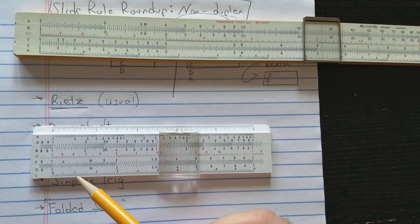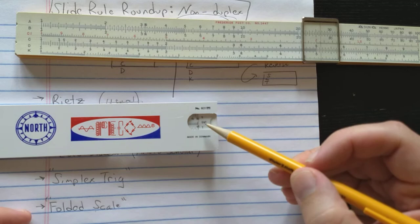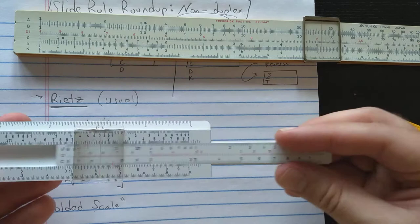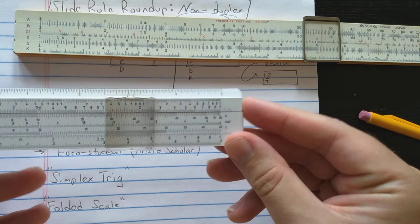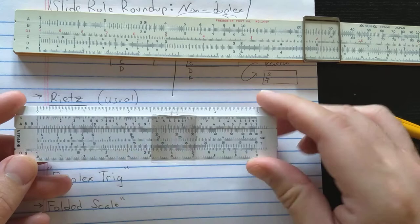What that does is it allows you to get an extra scale on the reverse on the slide. So you can see most Rietz type slide rules have the S, T, and ST scale on the slide. And then on almost all Rietz slide rules, the S scale is keyed to the C scale instead of the A scale. And the reason they can get away with that is because the extra range of the S scale is now on the ST scale.